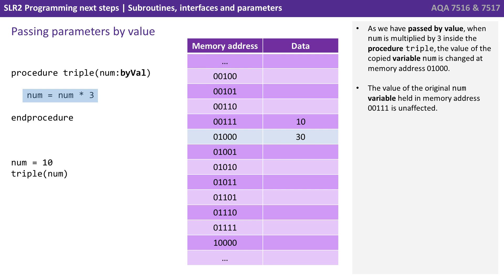As we've passed by value, when num is multiplied by 3 inside the procedure triple, the value of the copied variable num is changed at memory address 0100. The value of the original num variable, held in memory address 00111, is unaffected.